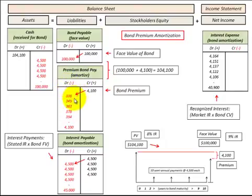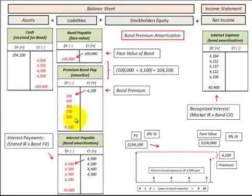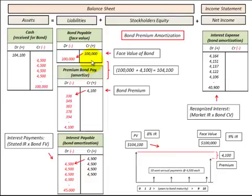The credit of $4,100 plus the bonds payable of $100,000 balances with the $104,100 in cash. Each period we amortize this premium down until we have a zero balance. The credits of $4,100 cancel with the debits of $4,100, so at the maturity date the carrying value of that bond is $100,000.